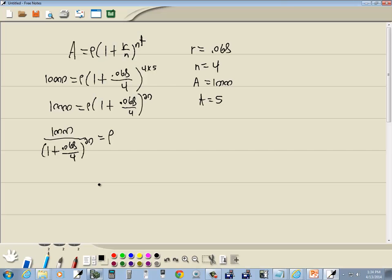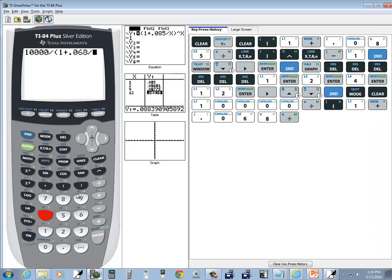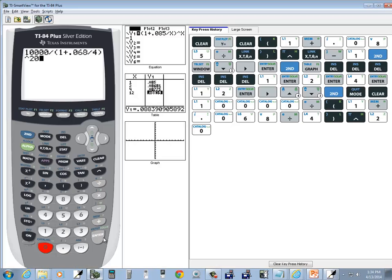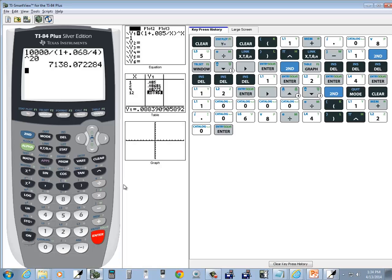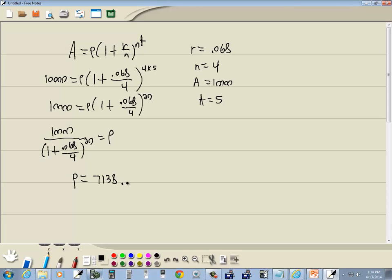Beginning parentheses, 1 plus .068 divided by 4, close parentheses, caret 20, and then enter. And we get P is equal to 7138.07 and that'd be our answer.